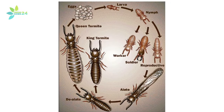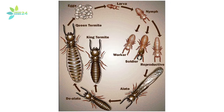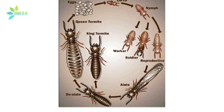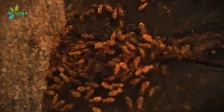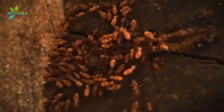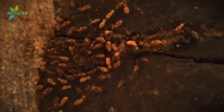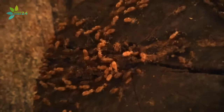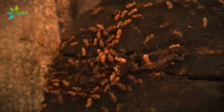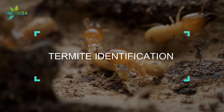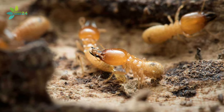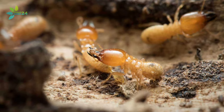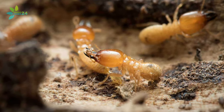Termites are social insects characterized by the allotment of labor within castes, sharing of food, shelter, and resources, and cooperation in rearing the young. The castes include worker, soldier, and reproductive social groups. Subterranean termites are composed of both males and females, unlike most other social insects where the majority of members are females.